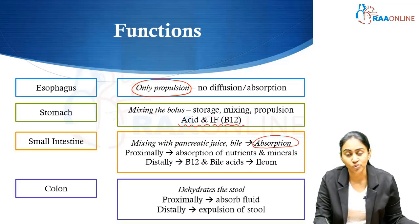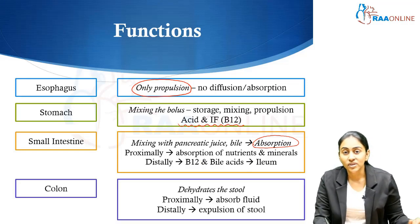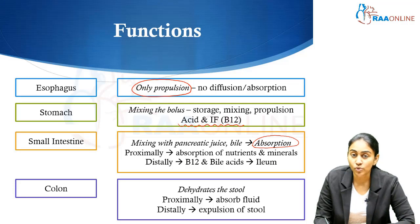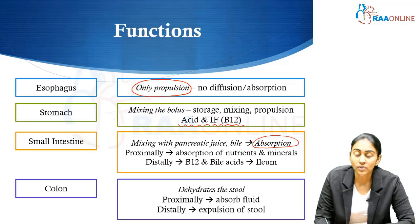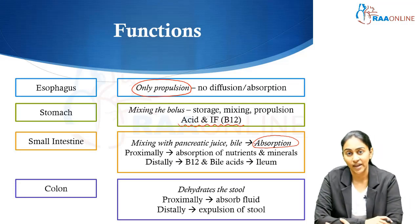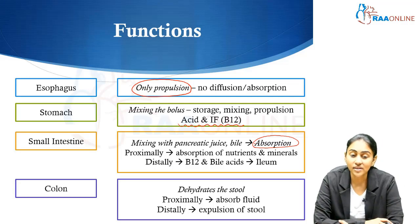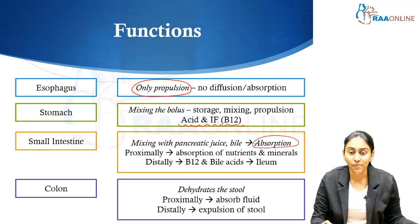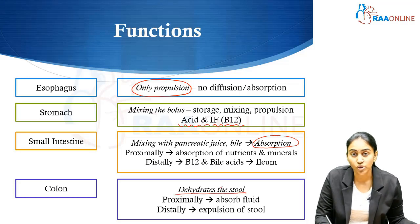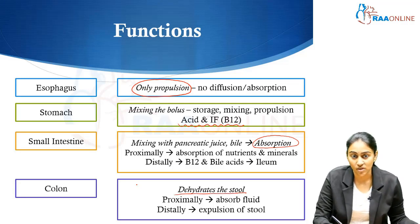Then we have the colon, whose primary aim is to dehydrate the stool. It significantly reduces the volume of the stool. The proximal colon plays an important role in absorbing fluid and dehydrating the stool, whereas distally, the important function is in propelling and expelling the stool. These are the distinct functions of the different parts of the gastrointestinal system.